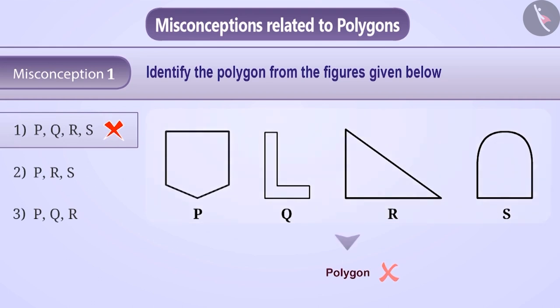Some students think that only large shapes or figures can be polygons. Since figure Q appears smaller, they don't consider this as a polygon. They consider P, R and S as polygons and give answer as option 2, which is the wrong answer.